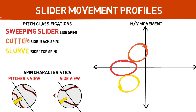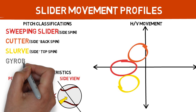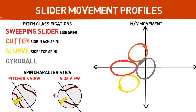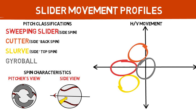Lastly, something that is becoming more and more common: the gyro ball. It is a pitch that has close to 0% spin efficiency, making it right around the origin point of our chart. Its spin characteristics are unique from the rest — it spins around a central point on the ball like a bullet shot out of a gun.